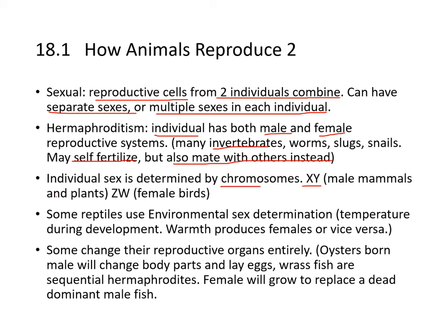In plants and birds, ZW is female — female birds are hemizygous. Some reptiles use environmental sex determination, where temperature during development determines sex: a warm environment produces females and a cold environment produces males.